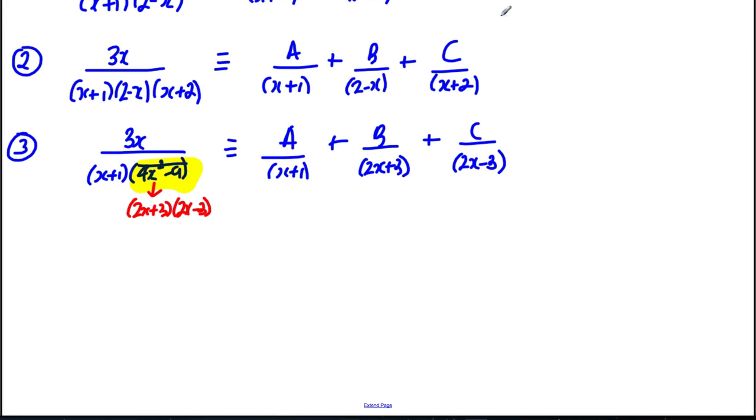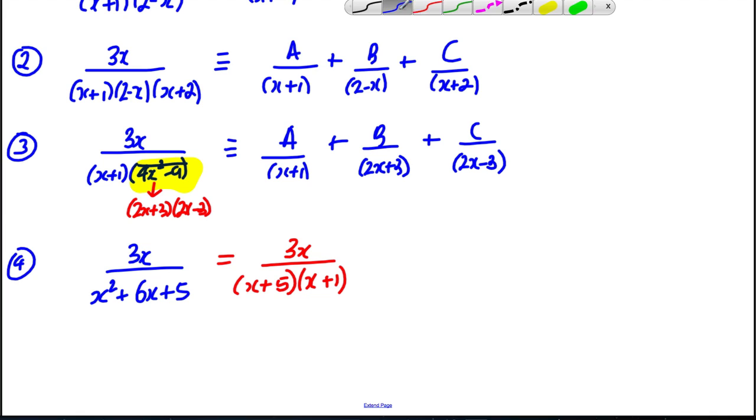Next, another standard trick to look out for. If you had something of the following form, 3x over x squared plus 6x plus 5, the first thing you'd be expected to do is write this as a factorised version like that, and then you would use the standard result, so that would be A over the first one plus B over x plus 1.